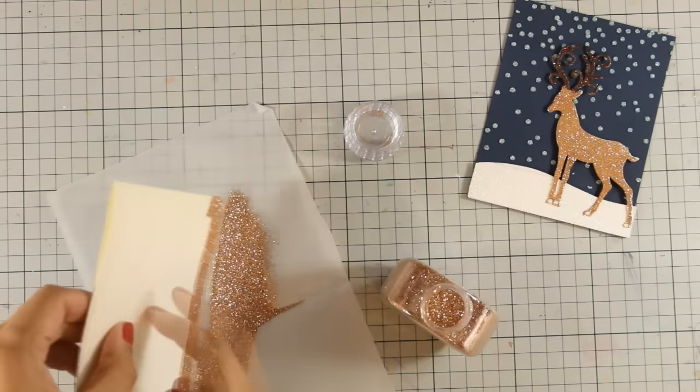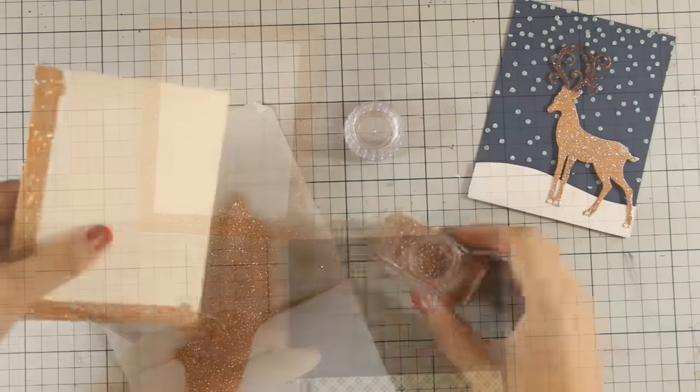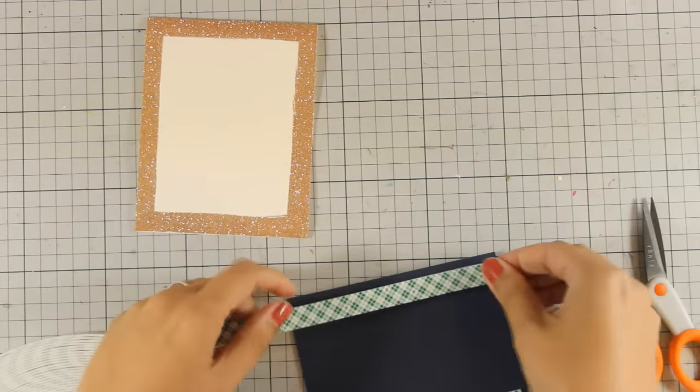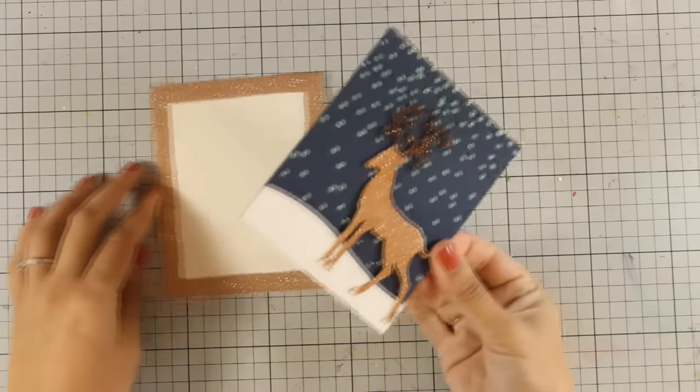This is a great way to bring everything together and to add even more shine on your cards. Just because I love dimension, I am going to add some foam tape at the back of my panel and stick it directly on top of my card base.